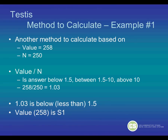Another method to calculate this, with our value of 258 and N of 250: take the value divided by N, then determine if the answer is below 1.5, between 1.5 to 10, or above 10. So 258 divided by 250 equals 1.03. Since 1.03 is below 1.5, our value of 258 is S1.